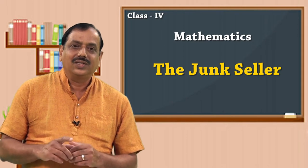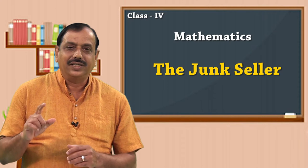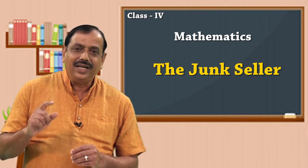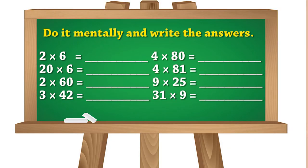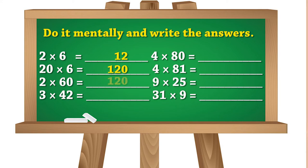First you need to guess the multiplication product of each of those terms, then you multiply them and verify your guess with the exact number. There are eight problems displayed on the screen. The first one is 2×6 — single digit — the answer is 12. The next is 20×6, a 2-digit number multiplied by a single digit, which gives 120. The third problem is 2×60, and interchanging the numbers also gives the same product: 120.